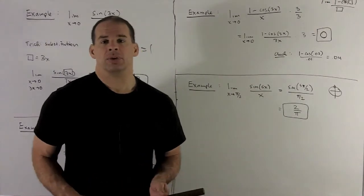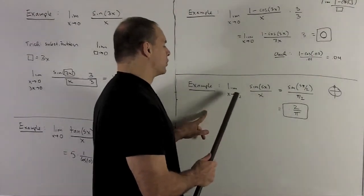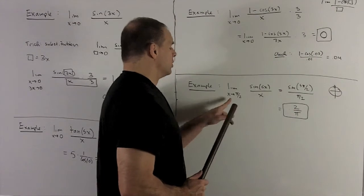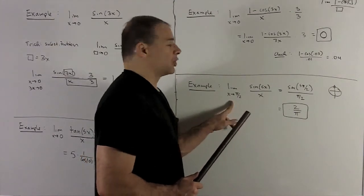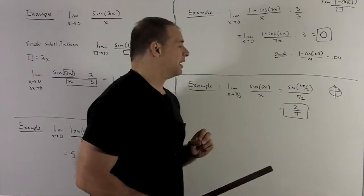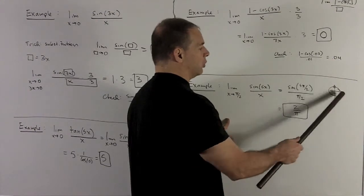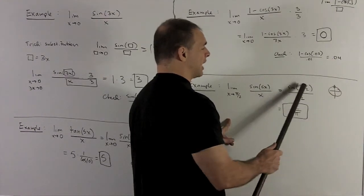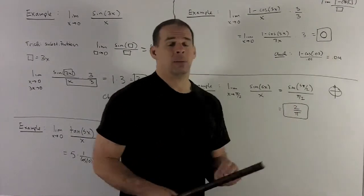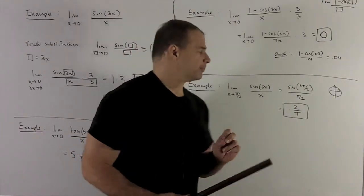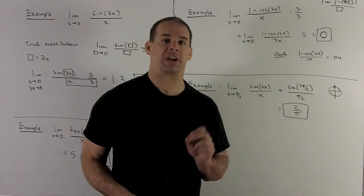One more example to remind us we don't always need these tricks. Take the limit as x goes to π/2 of sin(5x)/x. You might start churning out tricks, but note the limit is not going to 0 — it's going to a different number, so try evaluating first. Sin(5π/2): loop around once and you get sin(π/2) = 1, then divide by π/2 to get 2/π. That's a perfectly good number, so we stop there. Always check by evaluating first before doing extra work.